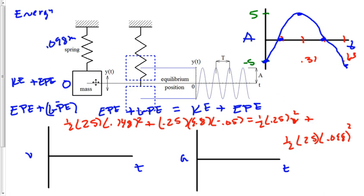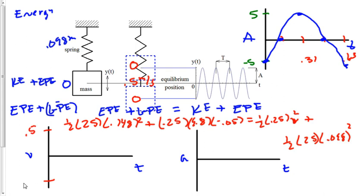What we're going to find is our maximum velocity is right here at the equilibrium position. Velocity at the top and bottom positions is 0. Maximum velocity here. When it comes up to the top, velocity equals 0 again. But when we're at the equilibrium position, we're going to find that it's 0.5 meters per second, based on that conservation of energy equation. So I'll place on my graph a positive 0.5 and a negative 0.5 for meters per second.